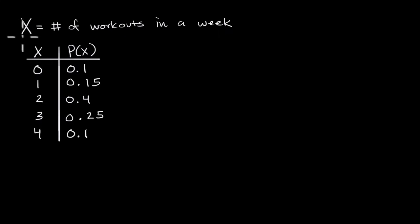I'm defining the random variable X as the number of workouts that I will do in a given week. This table describes the probability distribution for X. And as you can see, X can take on only a finite number of values: zero, one, two, three, or four. And so because there's a finite number of values here, we would call this a discrete random variable.